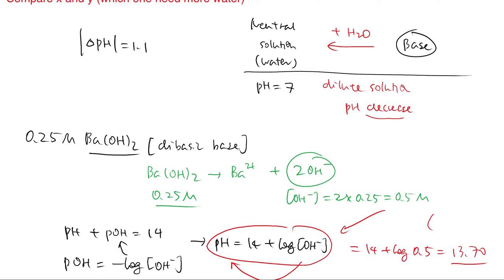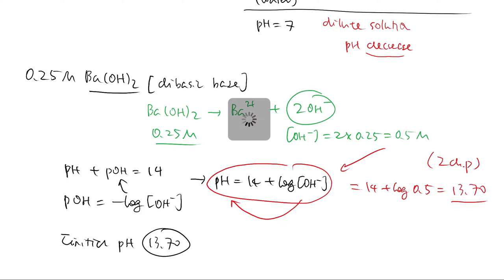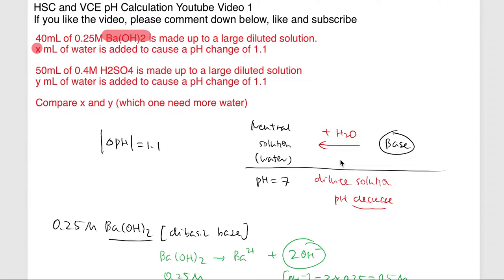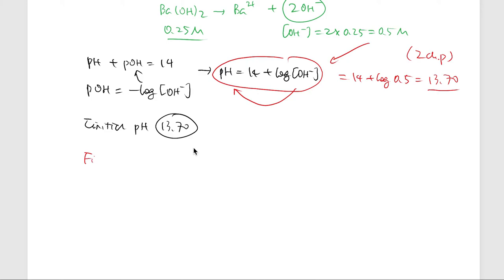Every single step I round pH to two decimal places. So my initial pH without adding any water is 13.70. They told us adding water causes a pH change of 1.1, and we know the pH is going to decrease towards 7. So the final pH equals 13.70 minus 1.1, which gives us 12.60.